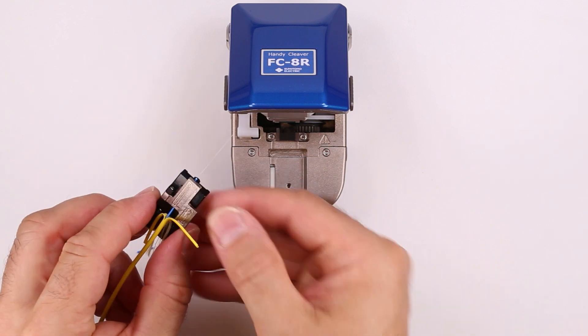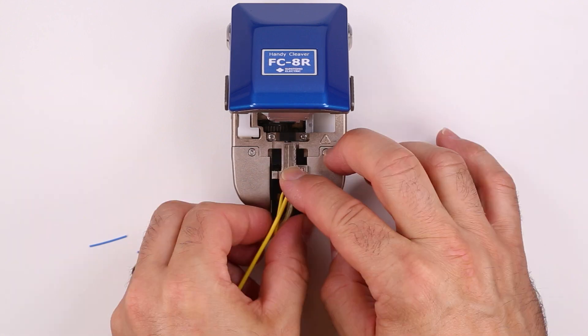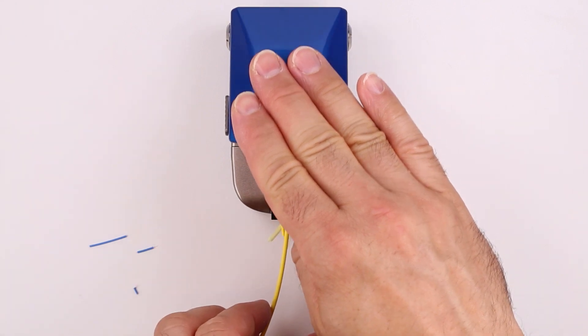Push the carriage wheel to its starting point. Place the fiber holder in the cleaver. Make sure it is all the way forward. Push down on the cleaver lid to cleave the fiber.